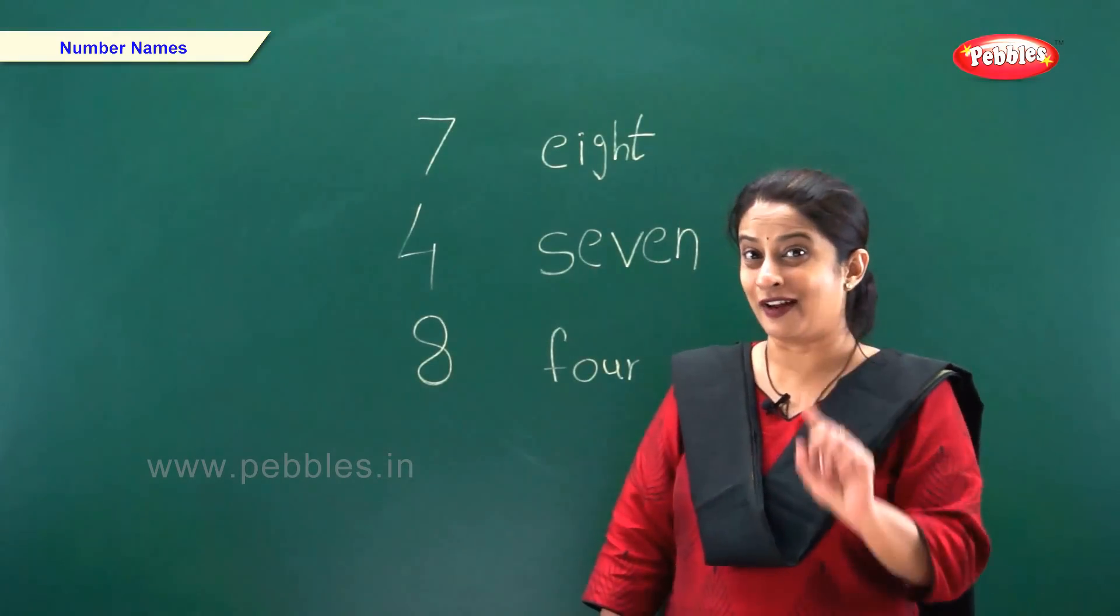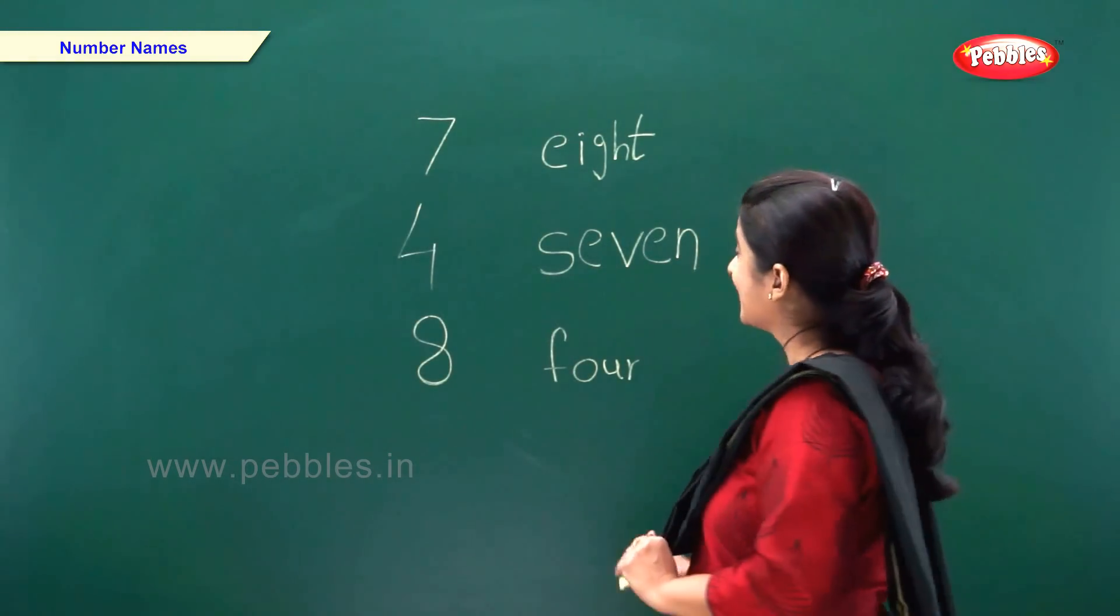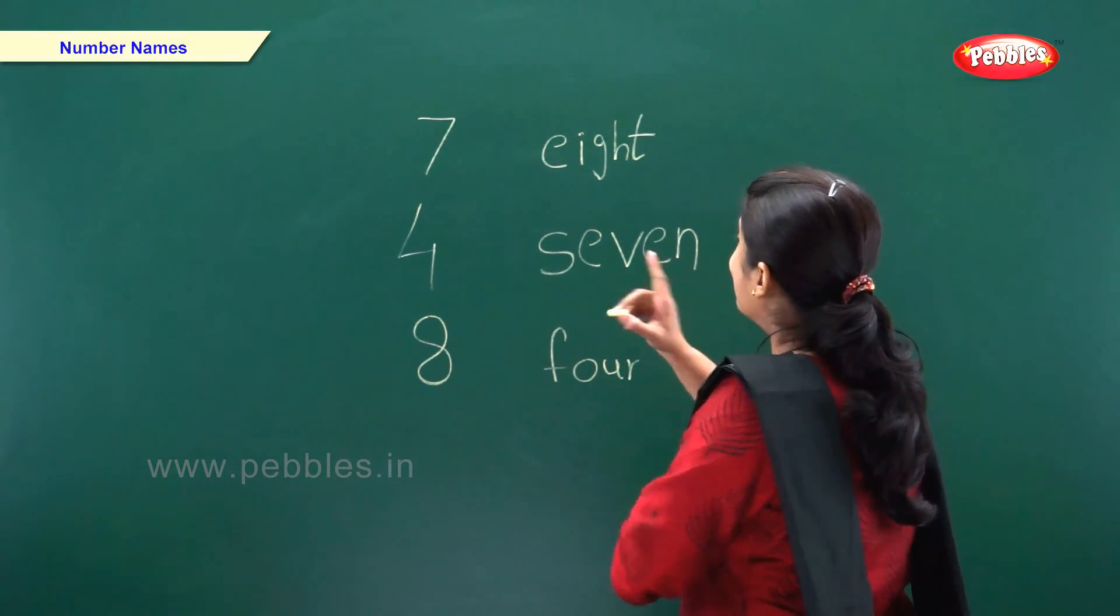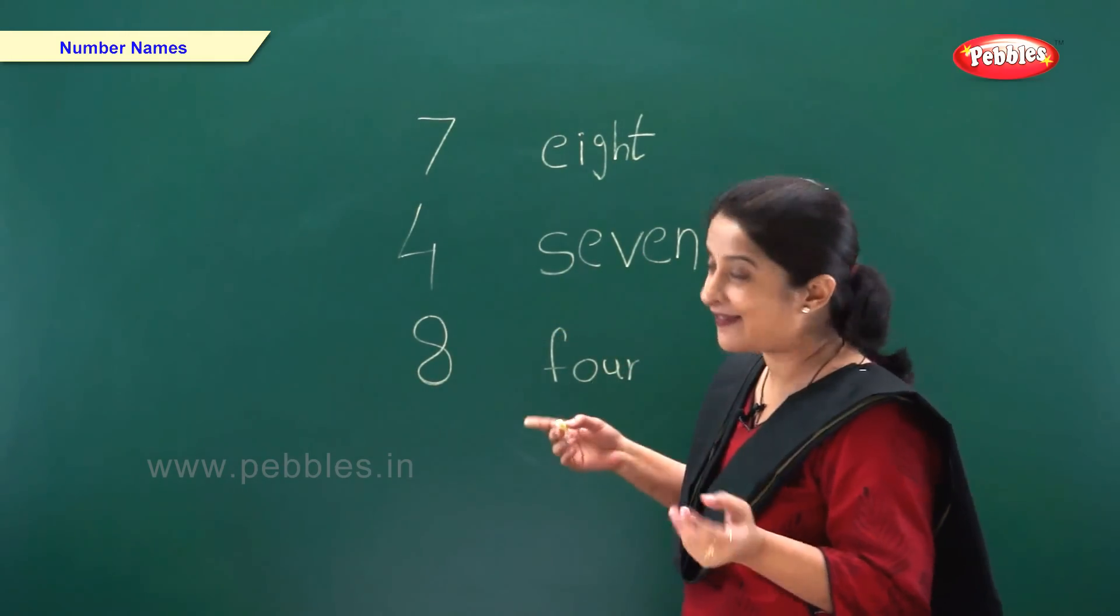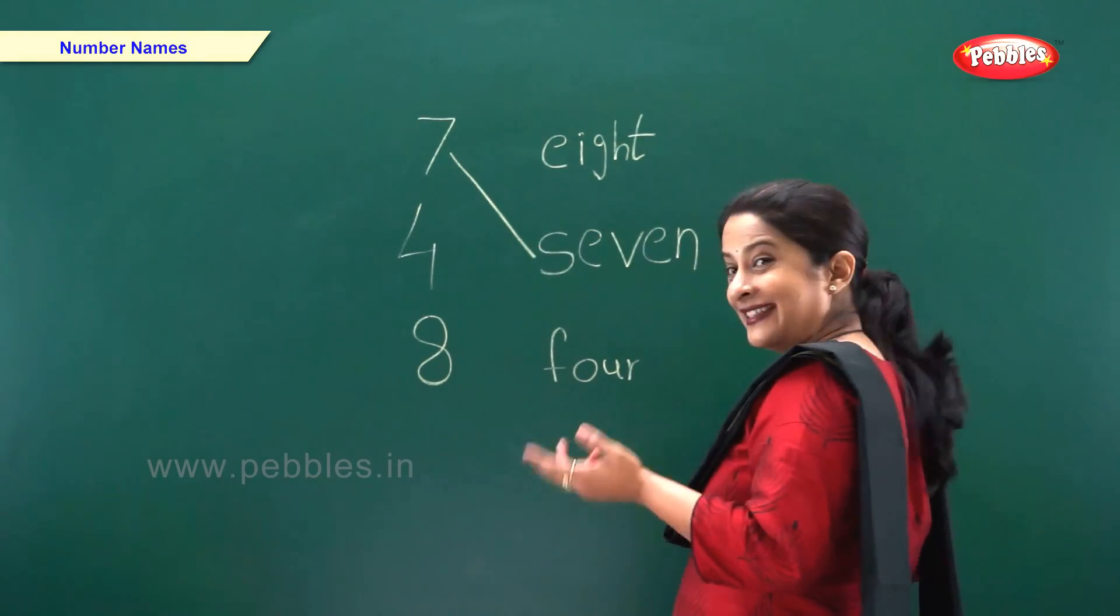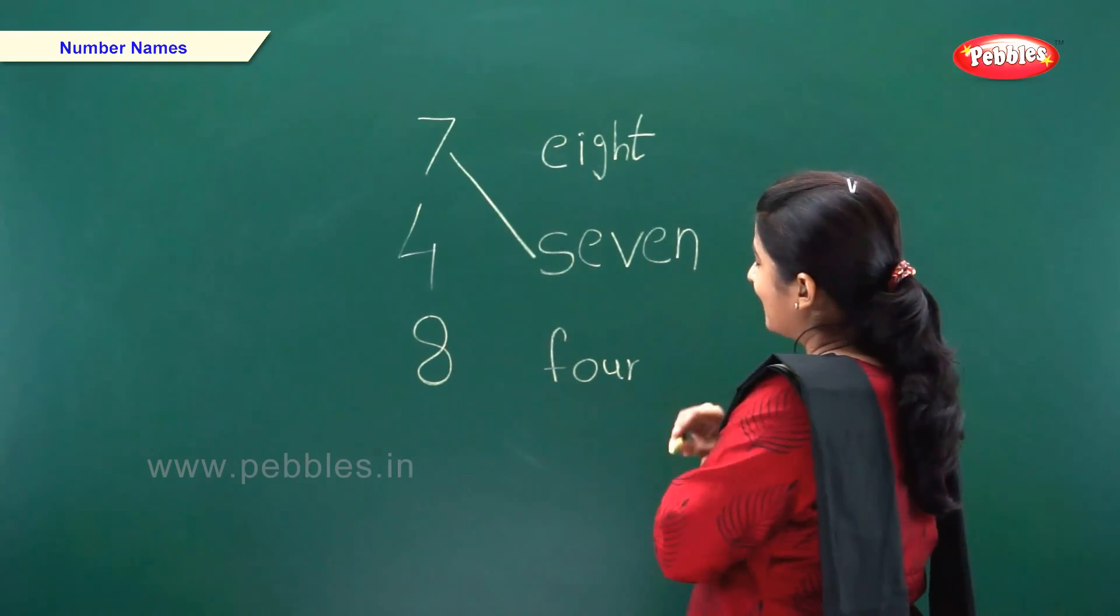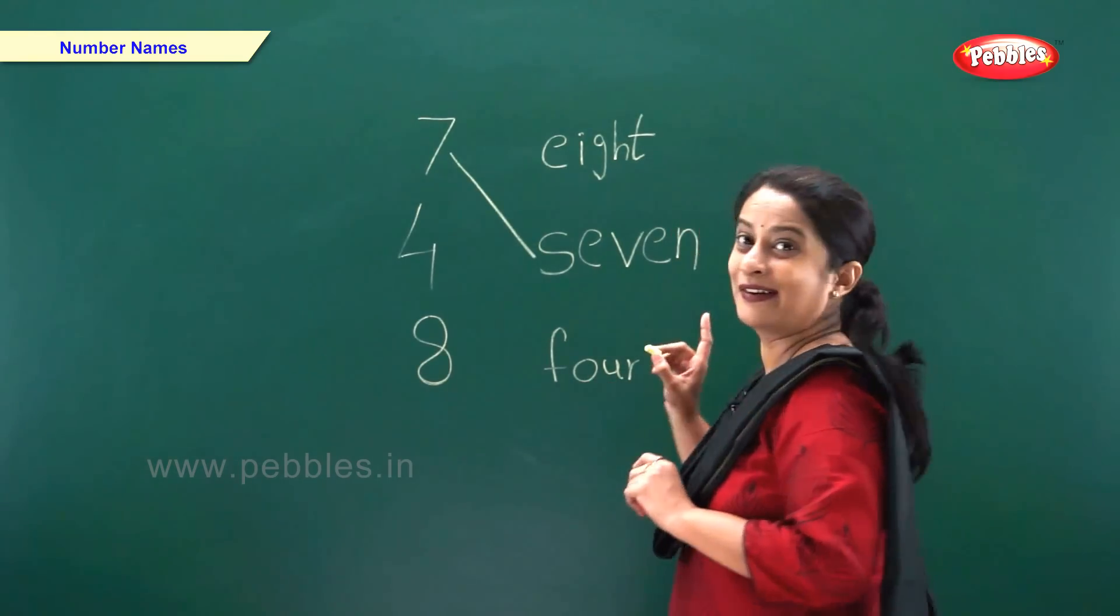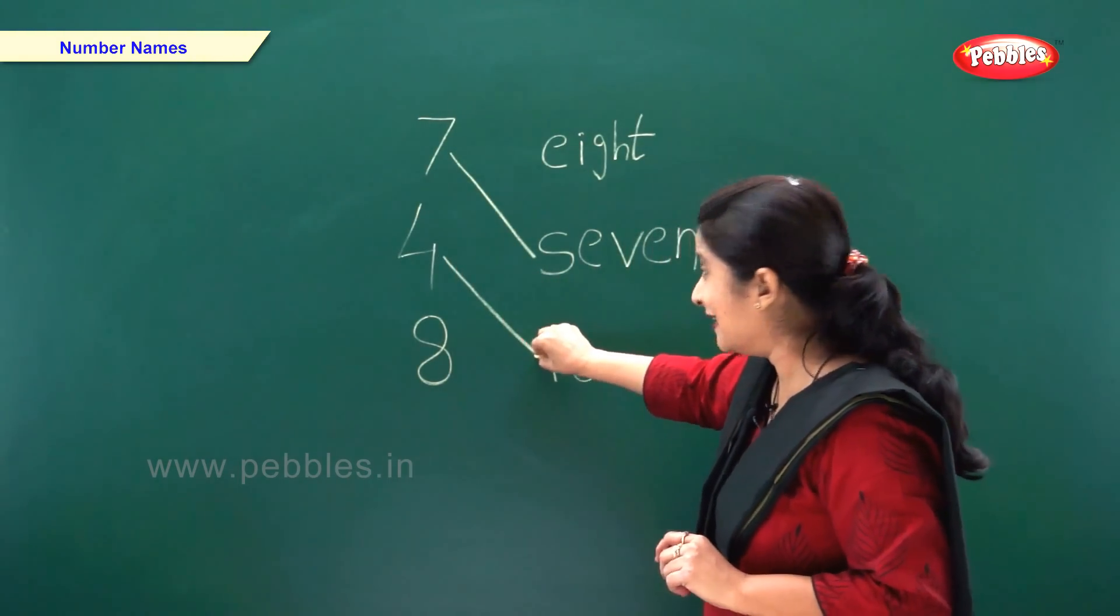Okay, friends. Now let's try and match these numbers. Number 7. So where is the number name? S E V E N. 7. So let's match. 7. Now, number 4. Okay. F O U R. 4. Number 4.